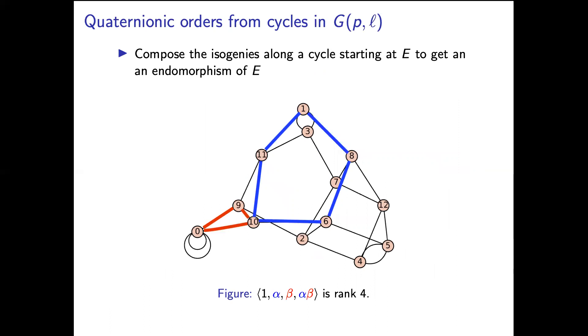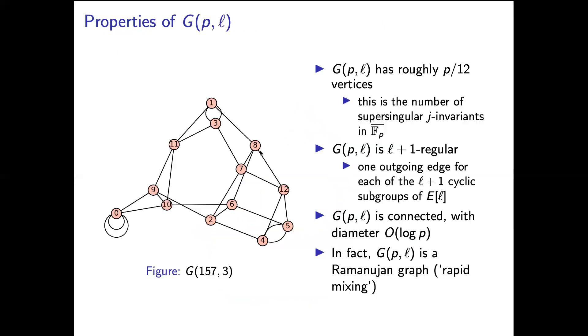So how are we going to use this to compute endomorphism rings? Well with the observation going back to Kohel's thesis that a cycle in this graph will give us an endomorphism. If we for example look at this blue cycle based here at 10, if we compose the isogenies along the cycle, we'll get an endomorphism of the curve at this vertex 10.